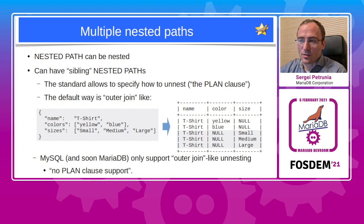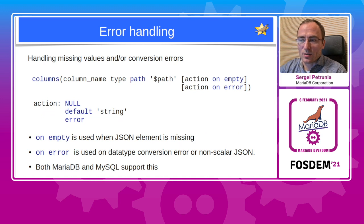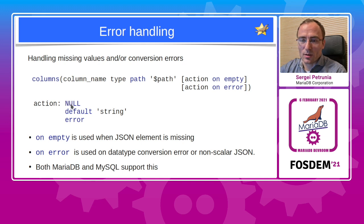Another feature of JSON table is error handling. JSON doesn't have types, so one needs to account for possible errors when converting to relational form. JSON table syntax allows specifying that: after specifying the path you can specify an action to do ON EMPTY — used when the JSON element requested is missing — or ON ERROR when there was a type conversion error. You can produce SQL NULL, use some default value, or emit an error. Both MySQL and soon MariaDB support this.